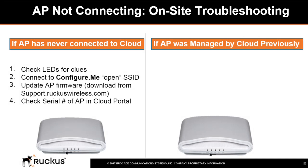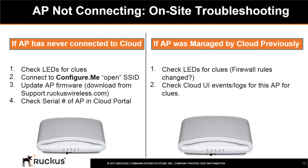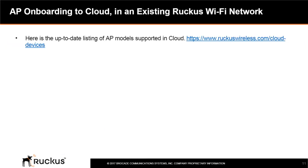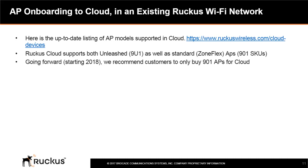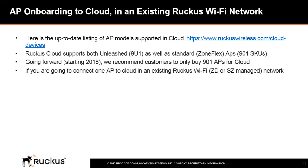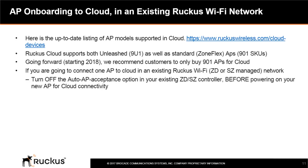If the AP was previously managed by the cloud, check the LEDs for clues — firewall rules may have changed — and check the cloud user interface events and logs for this AP. The URL shown provides an up-to-date listing of AP models supported in the cloud. Ruckus Cloud supports both Unleashed (9U1 SKUs) and standard ZoneFlex AP 901 SKUs. Starting in 2018, Ruckus recommends customers only buy 901 APs for the cloud. If connecting one AP to the cloud in an existing Ruckus Wi-Fi network using Zone Director or Smart Zone, turn off the Auto AP Acceptance option before powering on your new AP.